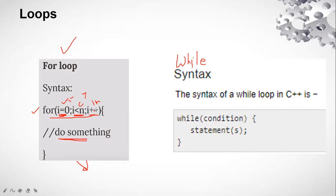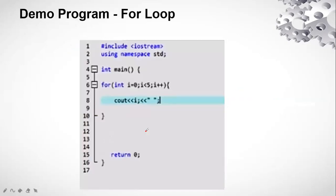The while loop defines the condition check at the top within the while keyword, and then the statements to be executed are placed within the curly braces. We'll see it clearly through a demo program.